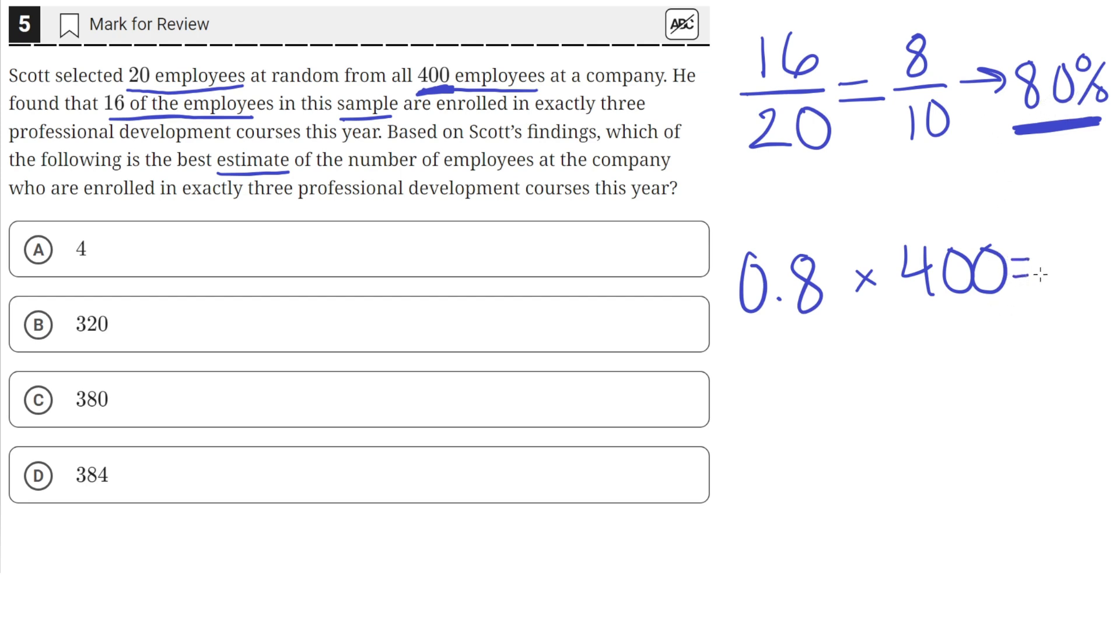So we do that, and we can put that into our calculator, but 80 percent of 400 is just 320.